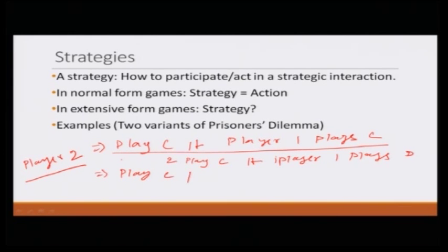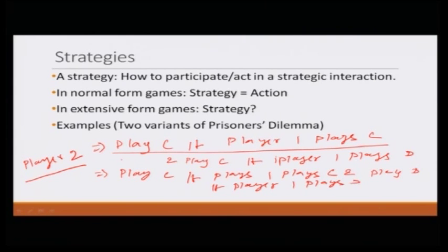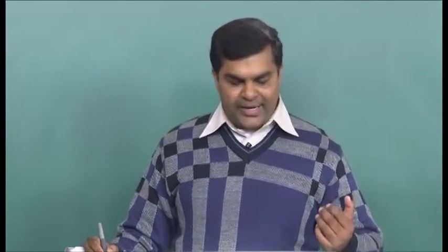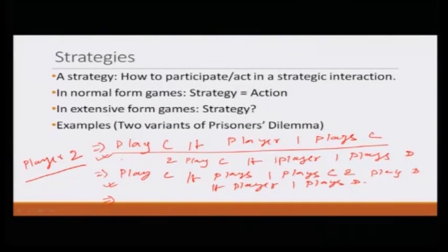The second strategy is: play C if player one plays C and play D if player one plays D — in other words, player two mimics player one. The third possibility is: play D irrespective of what player one has done. The fourth is to play the opposite of what player one has done: play D if player one plays C, and play C if player one plays D. So these are the four different strategies for player two.